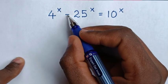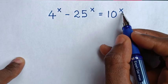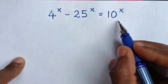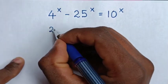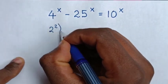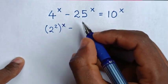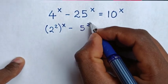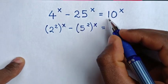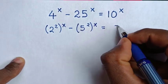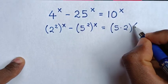How to solve 4^x minus 25^x equals 10^x. Find the value of x from this equation. We rewrite: 4 is the same as 2 squared, 25 is the same as 5 squared, and 10 is the same as 5 times 2, giving us (2²)^x minus (5²)^x equals (5 times 2)^x.